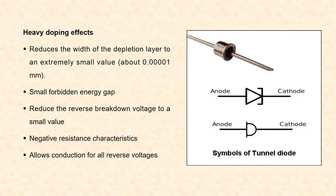Next is the heavy doping effects of tunnel diode. The heavy doping in tunnel diode reduces the width of depletion layer to an extremely small value of 0.0000001 mm, and also reduces the forbidden energy gap to a small value — that is, the energy gap between the conduction band and valence band. It also reduces the reverse breakdown voltage to a small value.